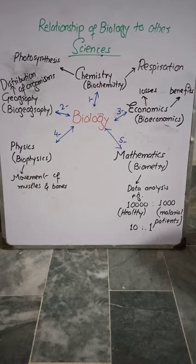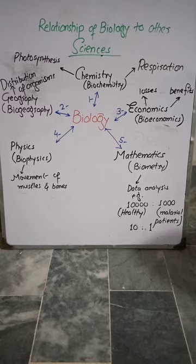Many chemical reactions take place inside the body of living organisms. Out of them, the most important are photosynthesis and respiration. Photosynthesis is a type of chemical reaction which takes place inside the body of plants. By means of photosynthesis, plants make their own food.